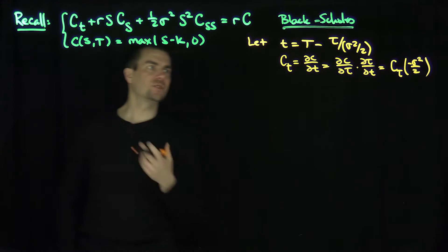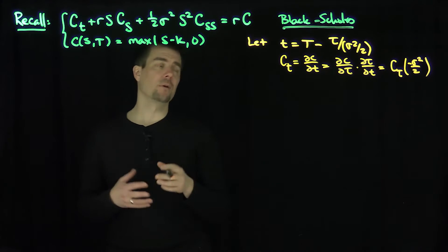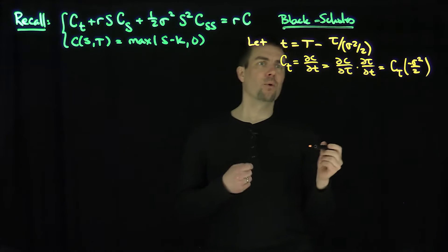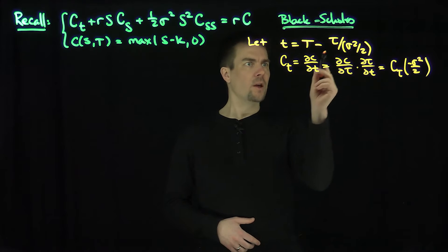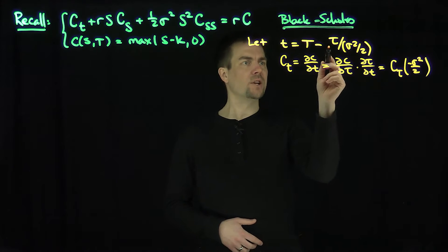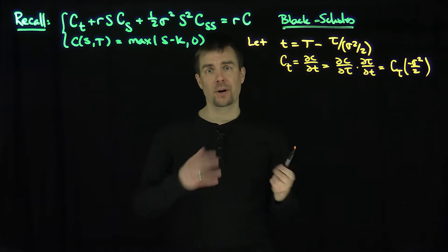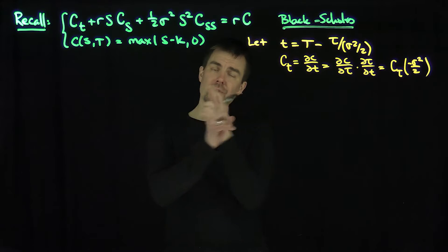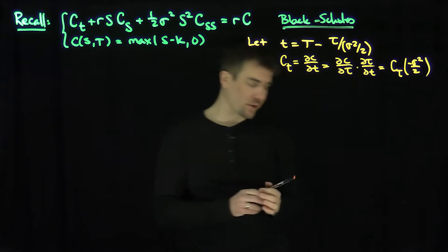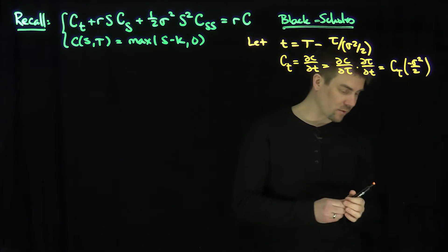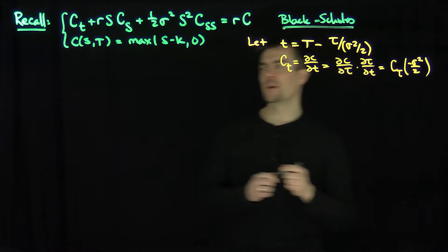That's just a linear change of variables for the time parameter. The important thing to notice is that when tau equals 0, t is at expiration — so I've interchanged the roles of the expiration and the origin for the time axis. That's the first change of variable.